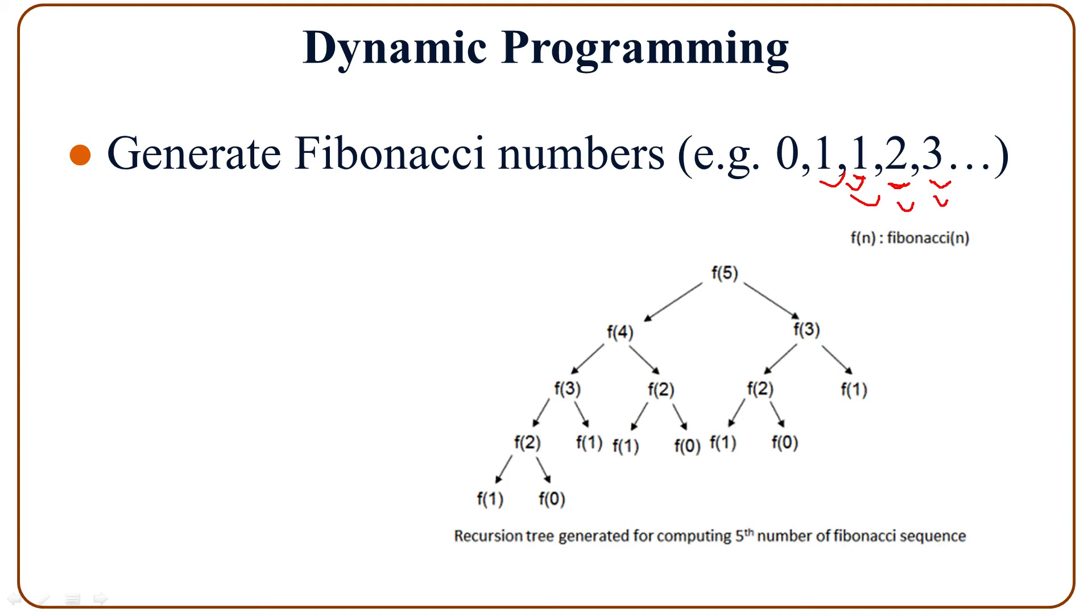The function call with the parameter, let's say F5, calls F4 and F3. F4 again in its turn calls F3 and F2. So we can see here F3 is called multiple times, and this is not very efficient.